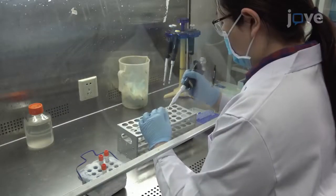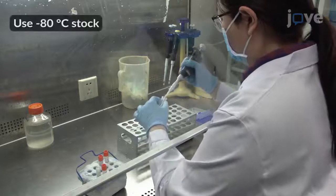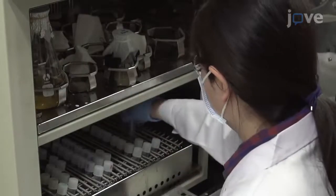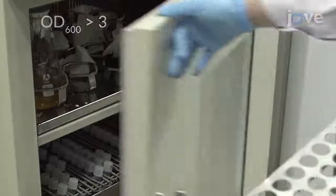To begin, inoculate two milliliters of 7H9 medium with wild-type and mutated mycobacterial reporter strains. Shake at 37 degrees Celsius for one to two days or until the OD at 600 nm reaches the stationary phase.